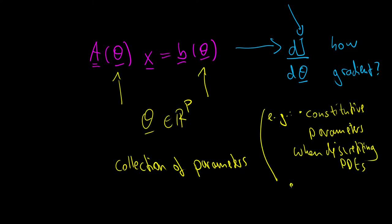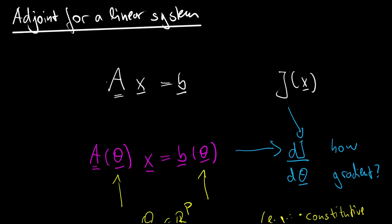It can also be something more related to machine learning — for instance, weights of a neural network, where maybe a neural network sets up your system matrix or right-hand side. If you're familiar with neural networks, you might know automatic differentiation — a way to efficiently get gradients — but it only works for explicitly given relations. Here our relation is implicitly given, because it requires the solution of a linear system. You could argue about differentiating through the solution mechanism (LU decomposition or an iterative solver), but this can become really impractical for many real-world scenarios, making the adjoint method more reasonable.